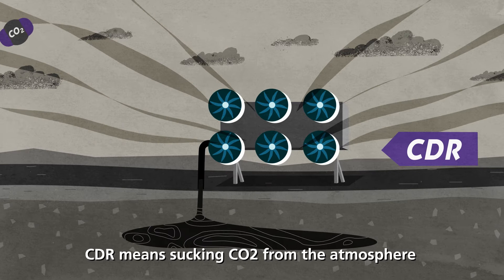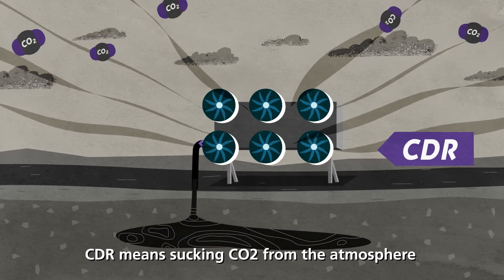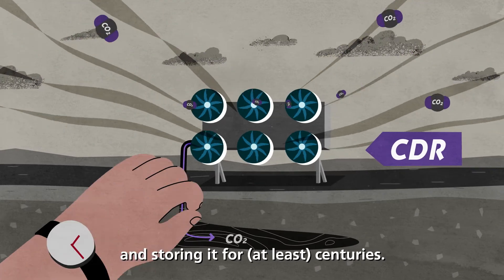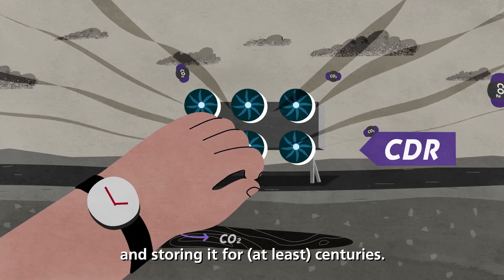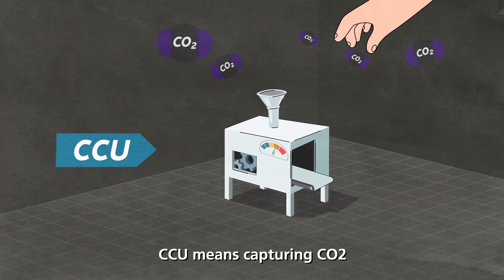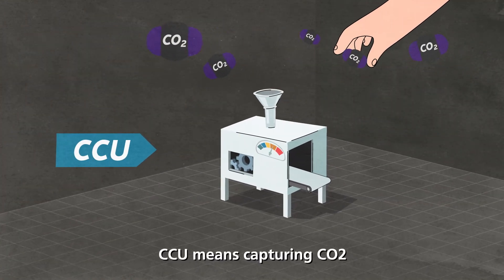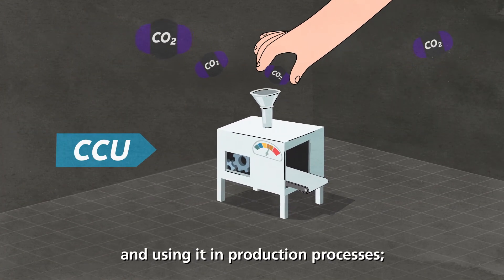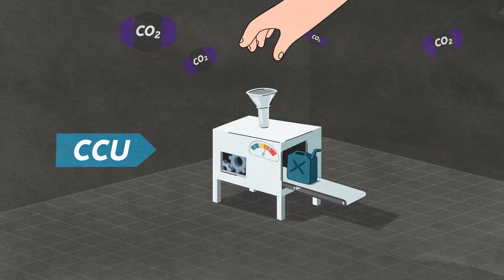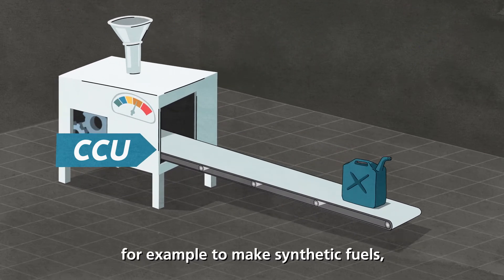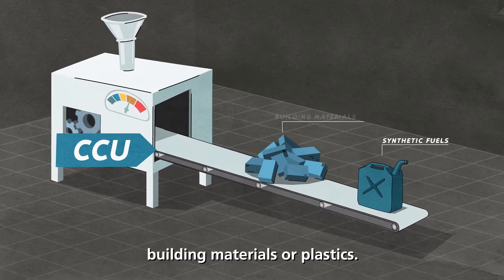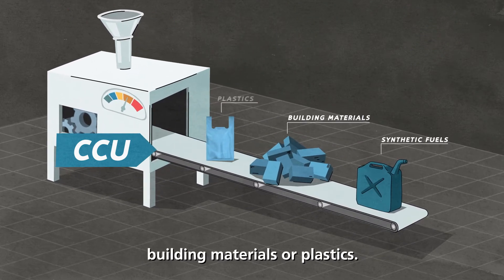CDR means sucking CO2 from the atmosphere and storing it for at least centuries. CCU means capturing CO2 and using it in production processes — for example, to make synthetic fuels, building materials, or plastics.